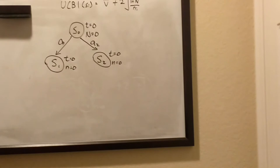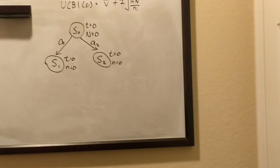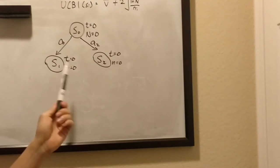So now, we need to select which node we want to expand. We use the UCB1 formula here, and because n is 0 for every state, this value, because of this n, is going to be infinity for both states. So since they're both infinity, we're just going to take it in sequential order, and we're going to expand, or we're going to look at state 1 first.